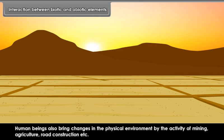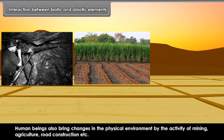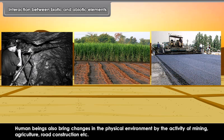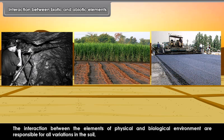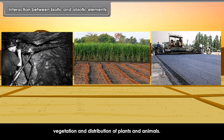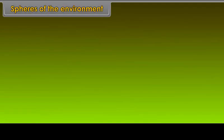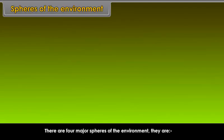The interaction between the elements of physical and biological environment are responsible for all variations in the soil, vegetation, and distribution of plants and animals. There are four major spheres of the environment: lithosphere, hydrosphere, atmosphere, and biosphere.